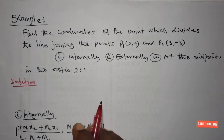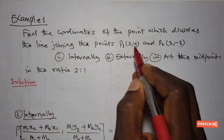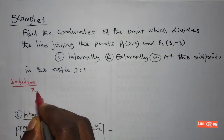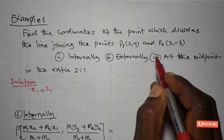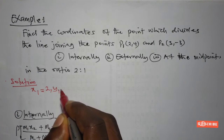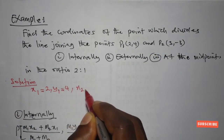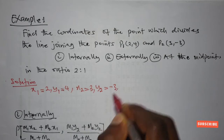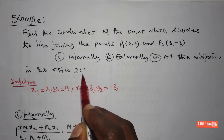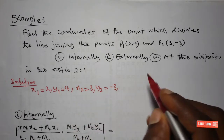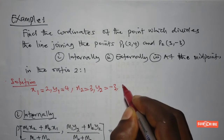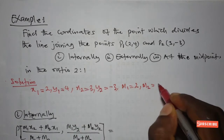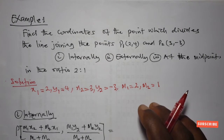The first thing we do is write out what we have from this problem. We identify: X1 = 2, Y1 = 4, X2 = 3, and Y2 = -3. We also have the ratio of division M1:M2, so here M1 = 2 and M2 = 1. With this we are set to apply the formulae derived in the last lecture.